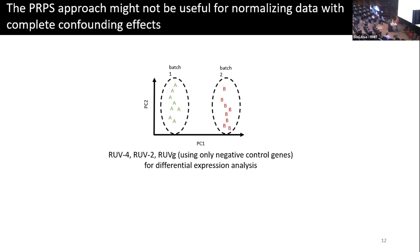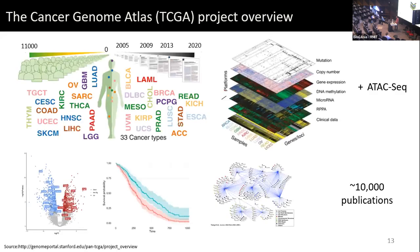That's a pretty short explanation of RUV — please read the paper if you are interested in the method. The TCGA is the largest cancer database. There are 33 cancer types, 11,000 samples, different modalities, and there are more than 10,000 publications using the TCGA.